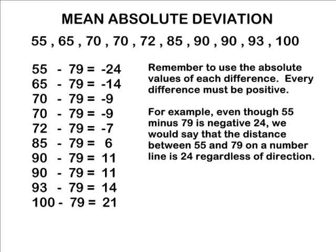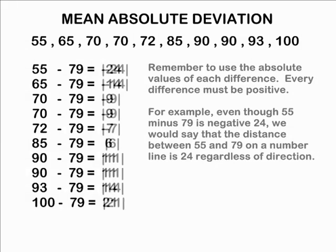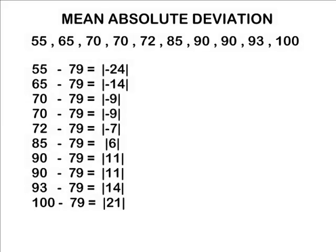For example, even though 55 minus 79 is negative 24, we would say that the distance between 55 and 79 on a number line is 24 regardless of the direction. So always make sure to express the difference of each element from the mean as a positive number.